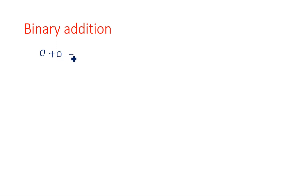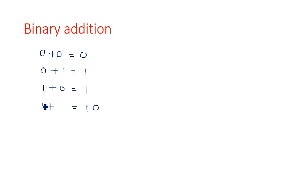The rules are: 0 plus 0 is 0, 0 plus 1 is 1, 1 plus 0 is 1, but 1 plus 1 is not 2 — it is 1 0 in binary. All digits are ones and zeros only. Binary 1 0 represents 2 (2 power 1 times 1 plus 2 power 0 times 0). So 1 plus 1 gives sum 0 and carry 1.